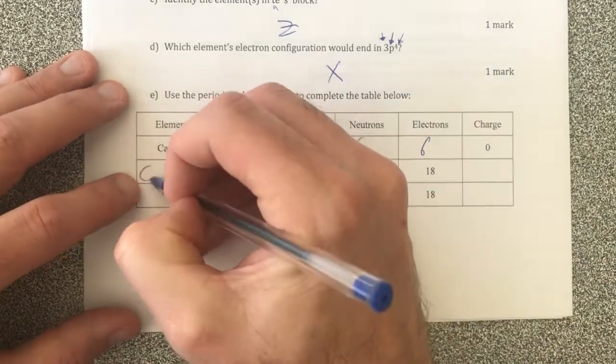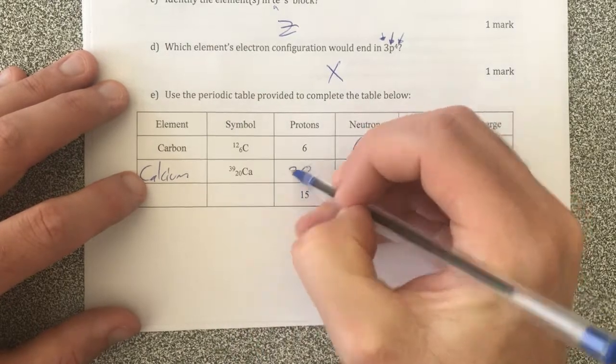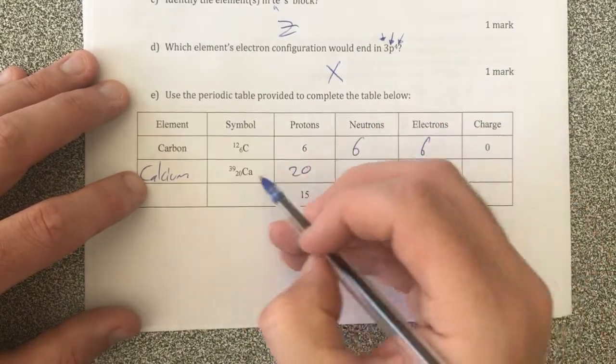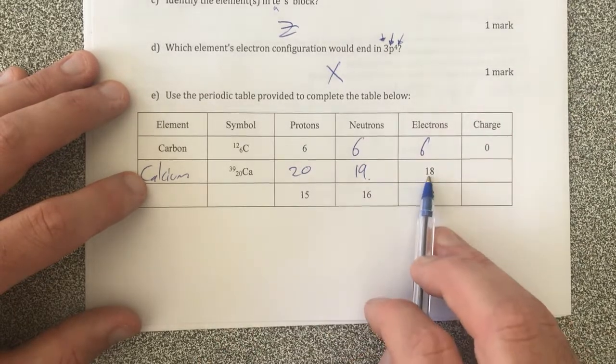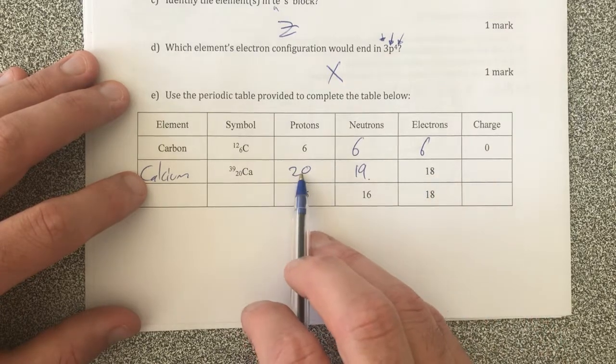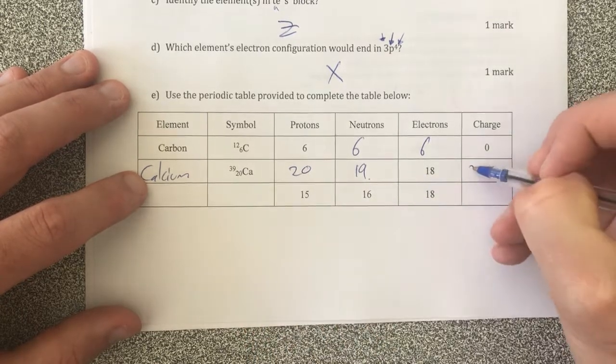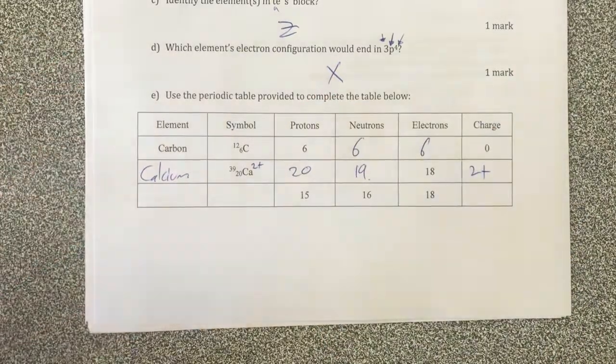Here we have calcium. Here we have protons, it should be the same as our atomic number. Our neutrons should be the difference, which is going to be 19. We have 18 electrons, so therefore if we've lost two electrons, we've got two more protons than we have electrons. Our charge should be 2 positive, and I should also put 2 positive there as well as my symbol.